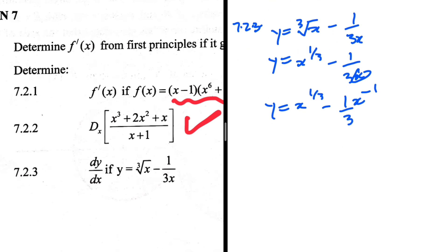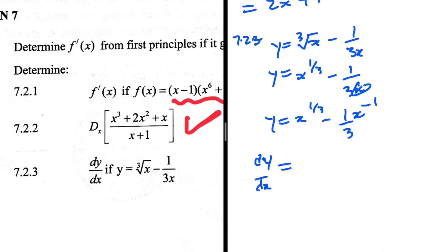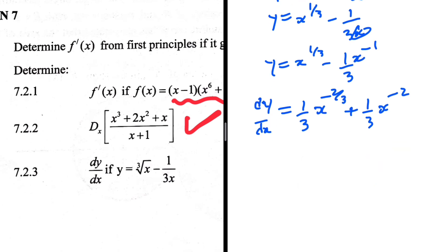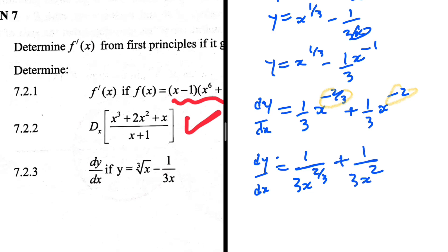Now applying the power rule, dy/dx equals (1/3) times (1/3) x to the power minus 2/3 plus (1/3) x to the power minus 2. To avoid negative exponents, move terms to the denominator: dy/dx equals 1 over (9 x to the power 2/3) plus 1 over (3x squared). That completes question 7.